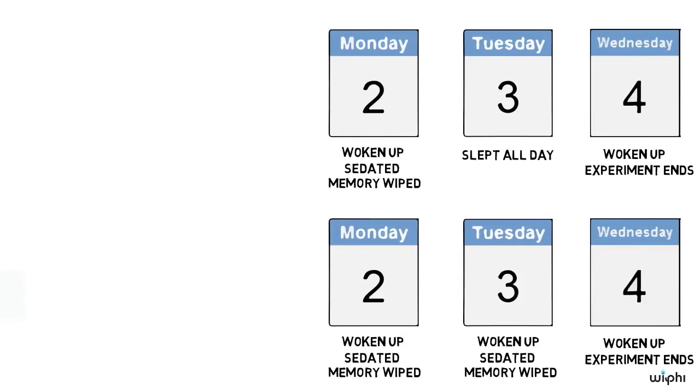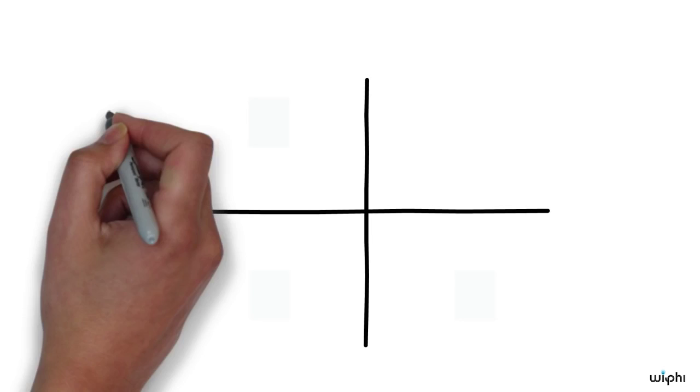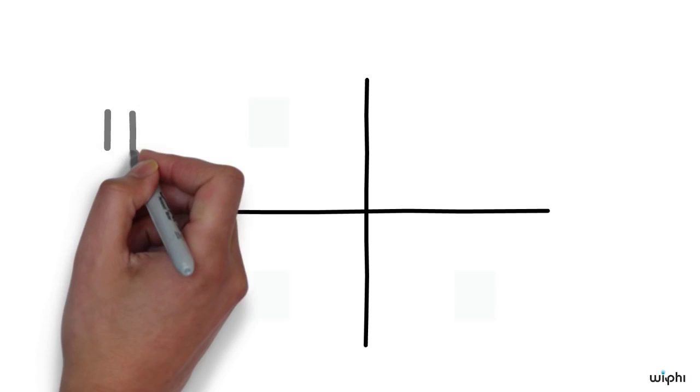We can make all this a little bit clearer by drawing a graph. On one side of the graph we can write H for heads and T for tails. On the other side let's write M for Monday and T for Tuesday.